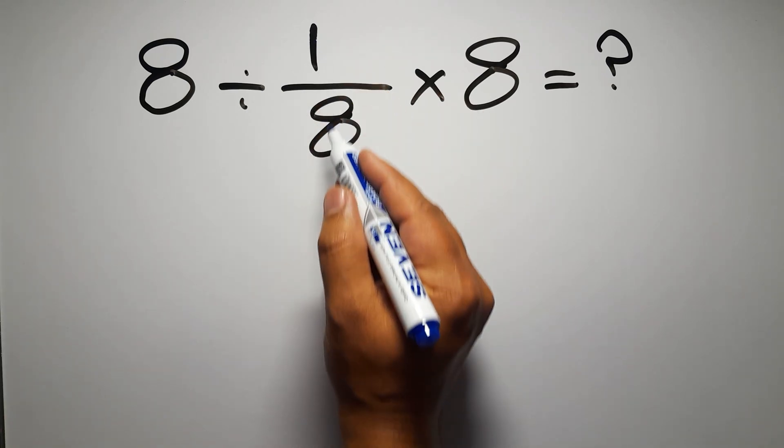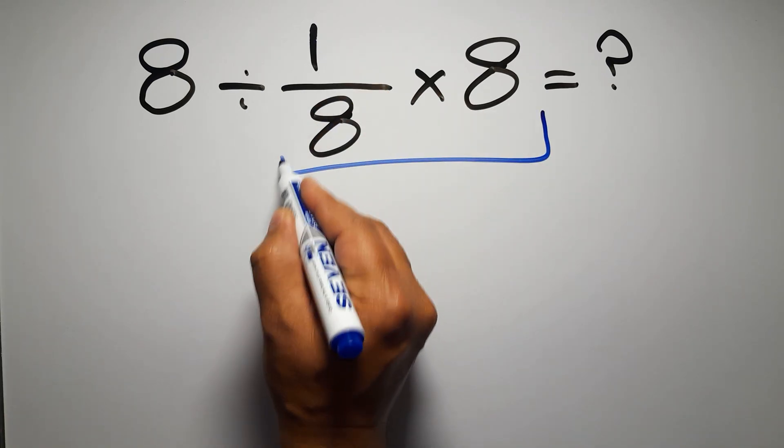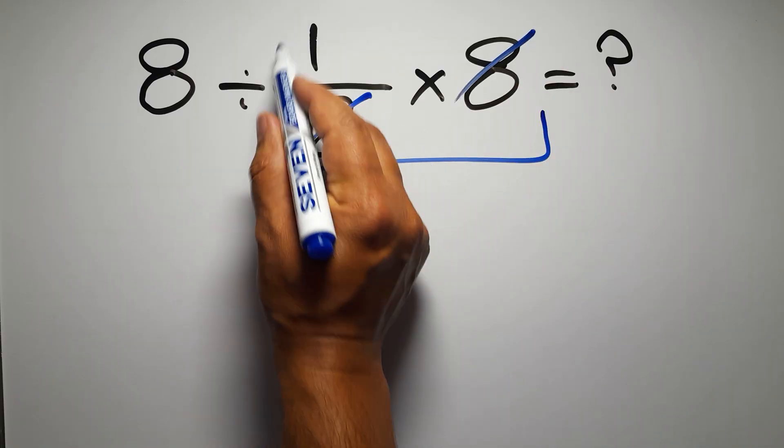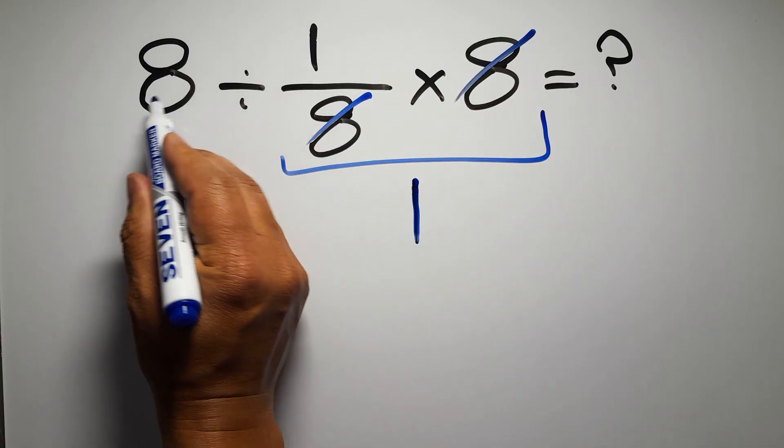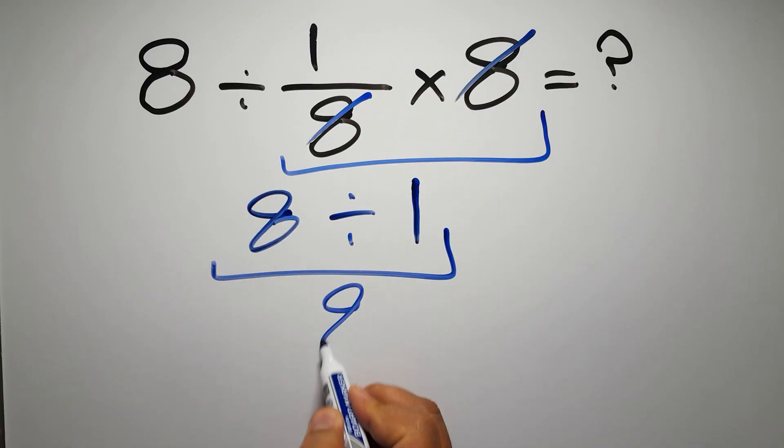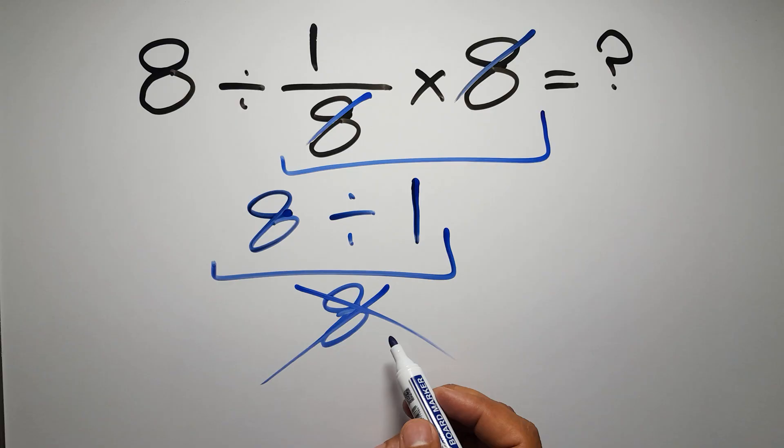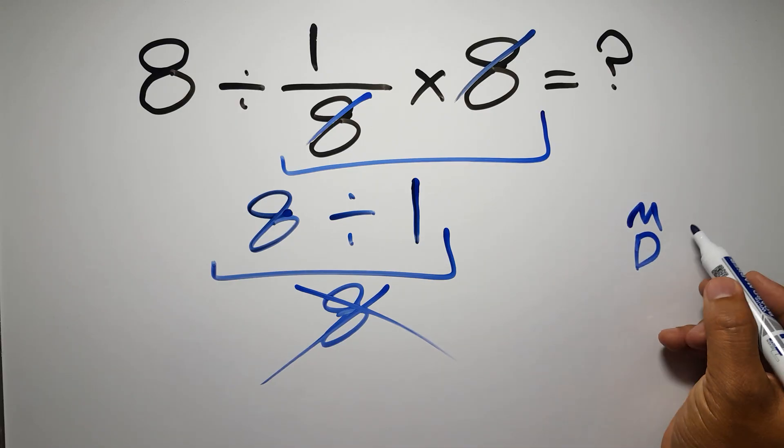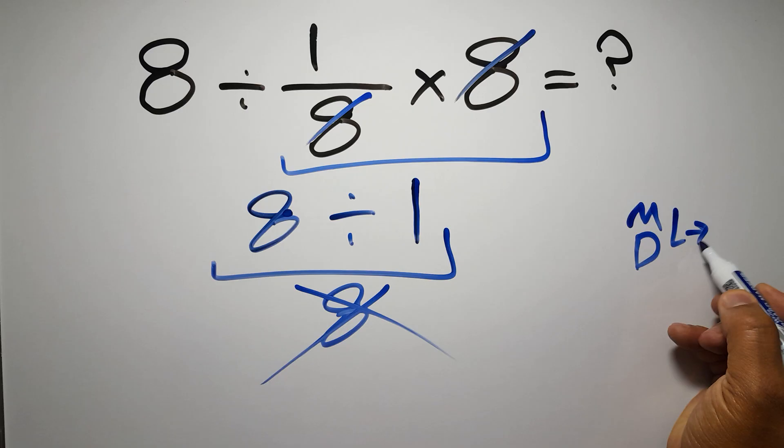First we do this multiplication 1 over 8 times 8. We can easily cancel this 8 and this 8, so here we have just 1, and 8 divided by 1 equals 8. But this answer is not correct because according to the order of operations, multiplication and division have equal priority and we have to work from left to right.